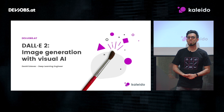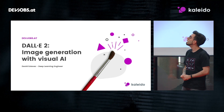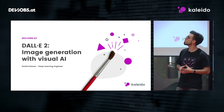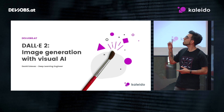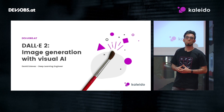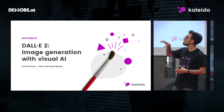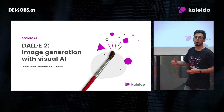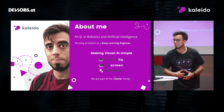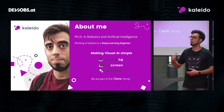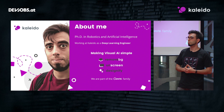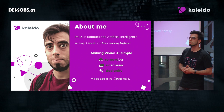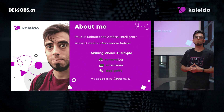Good evening. In this presentation I'm going to talk about DALL-E 2, which is a pretty new model for image generation. The overall topic is image generation with visual AI, but we are going to focus on this new model and explain how it works. A little bit about myself: I have a PhD in robotics and artificial intelligence from Madrid, Spain, and I'm currently working at Collido as a deep learning engineer. Collido is a company whose mission is making visual AI simple.